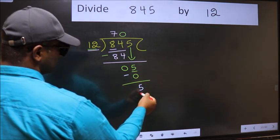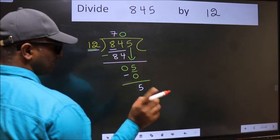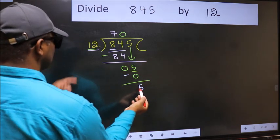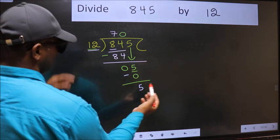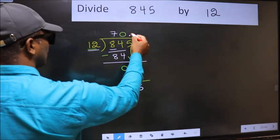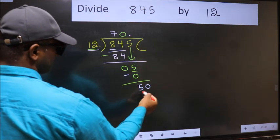Over here, we did not bring any number down, and 5 is smaller than 12. So now you can put dot and take 0. So 50.